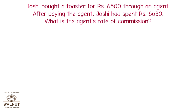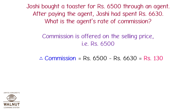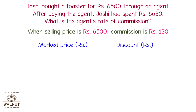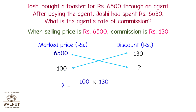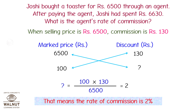Joshi bought a toaster for Rs. 6,500 through an agent. After paying the agent, Joshi had spent Rs. 6,630. What is the agent's rate of commission? Commission = Rs. 6,630 − Rs. 6,500 = Rs. 130. When selling price is Rs. 6,500, commission is Rs. 130. By cross multiplication, if selling price is Rs. 100, commission = 100 × 130 / 6,500 = 2. That means for every Rs. 100 the commission is Rs. 2, so the rate of commission is 2%.